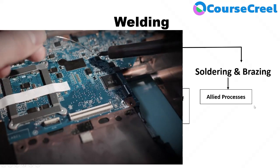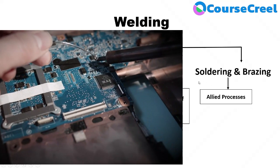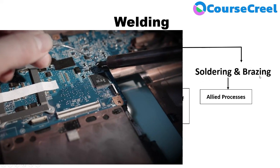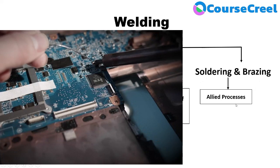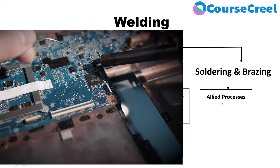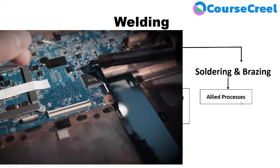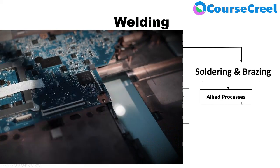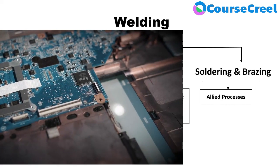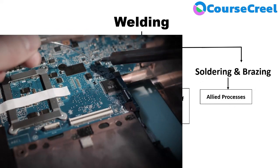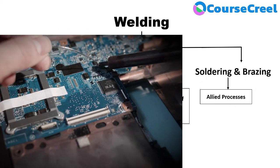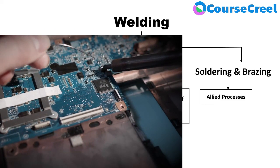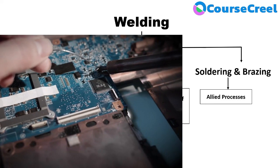Soldering and brazing are considered allied processes. In both processes, only the filler metal is melted — the base material is not melted.